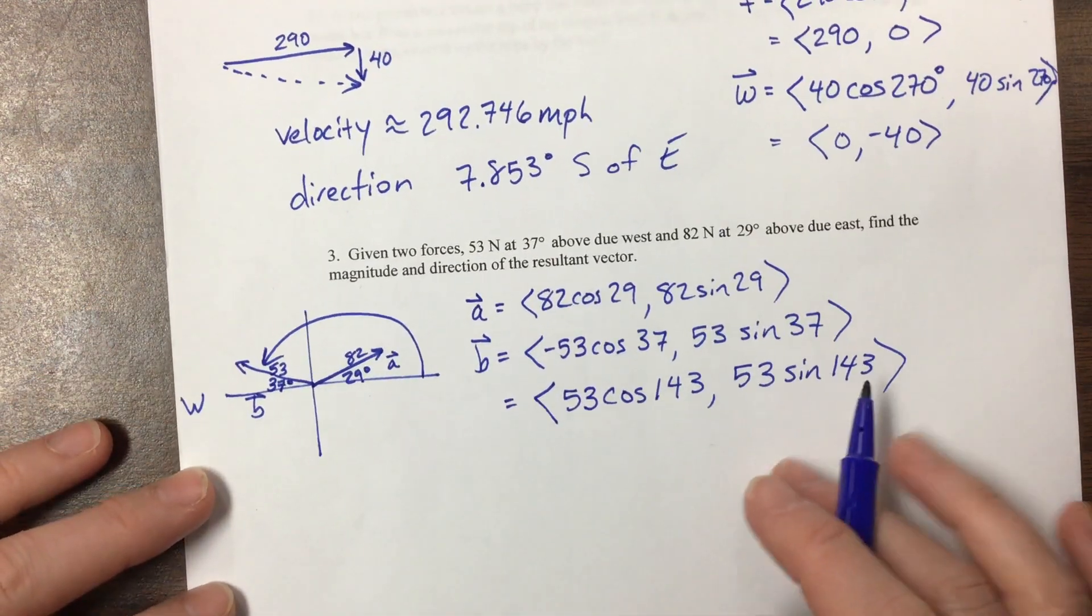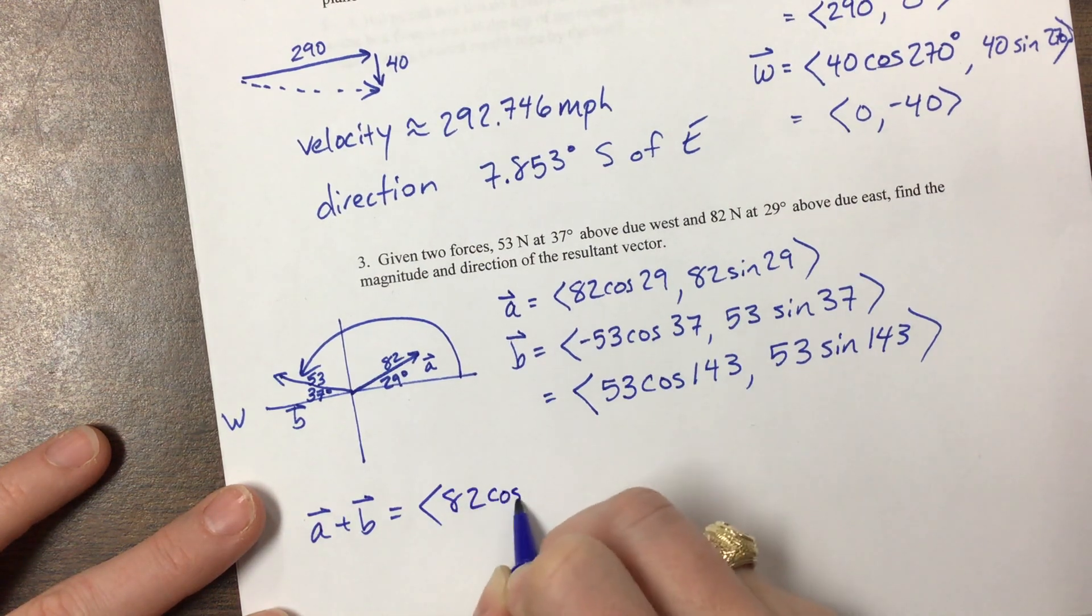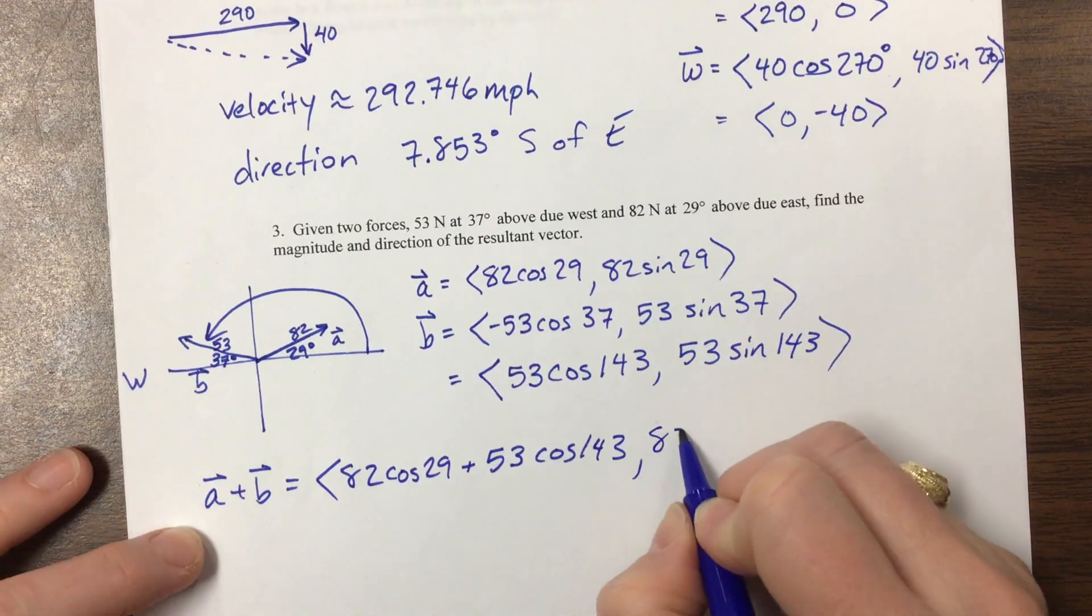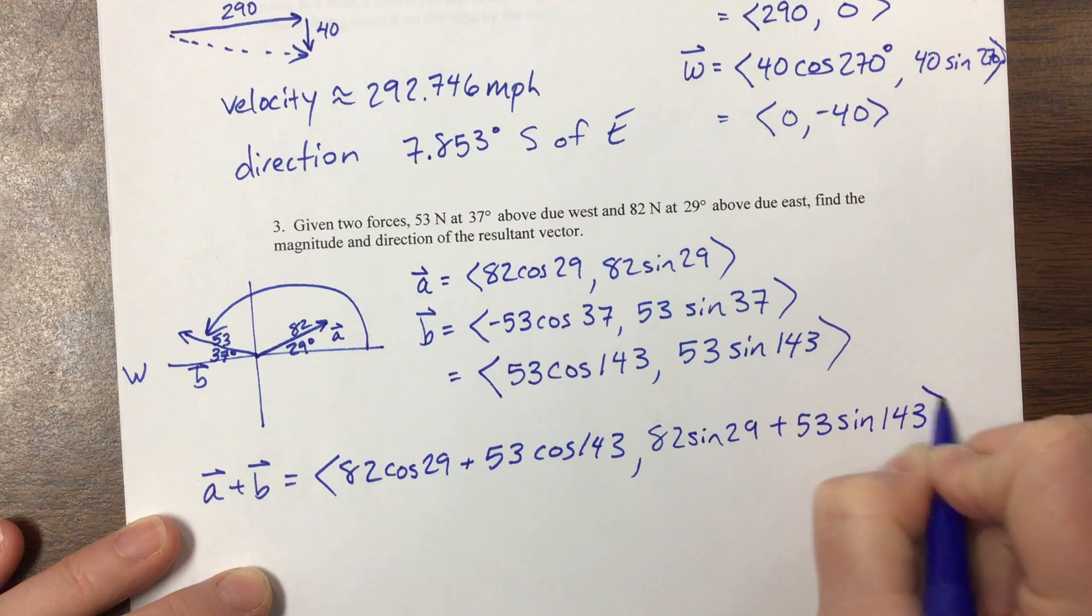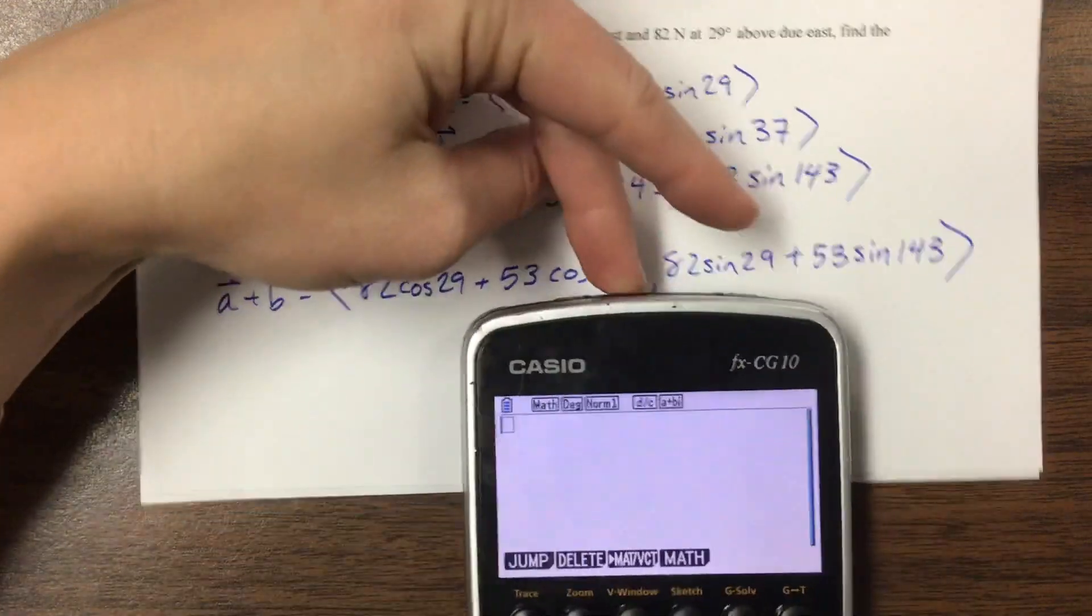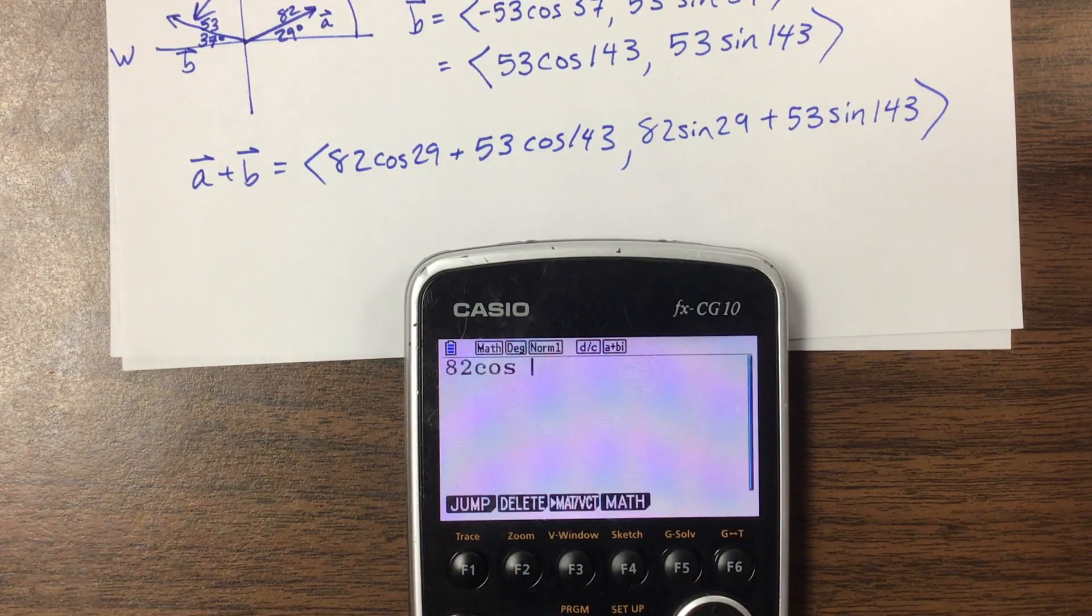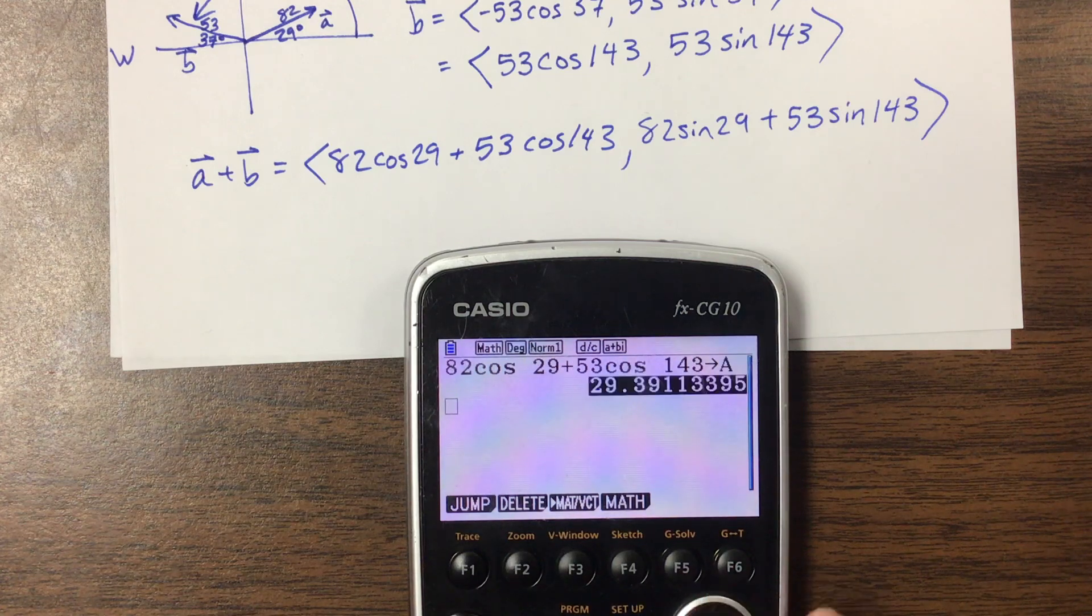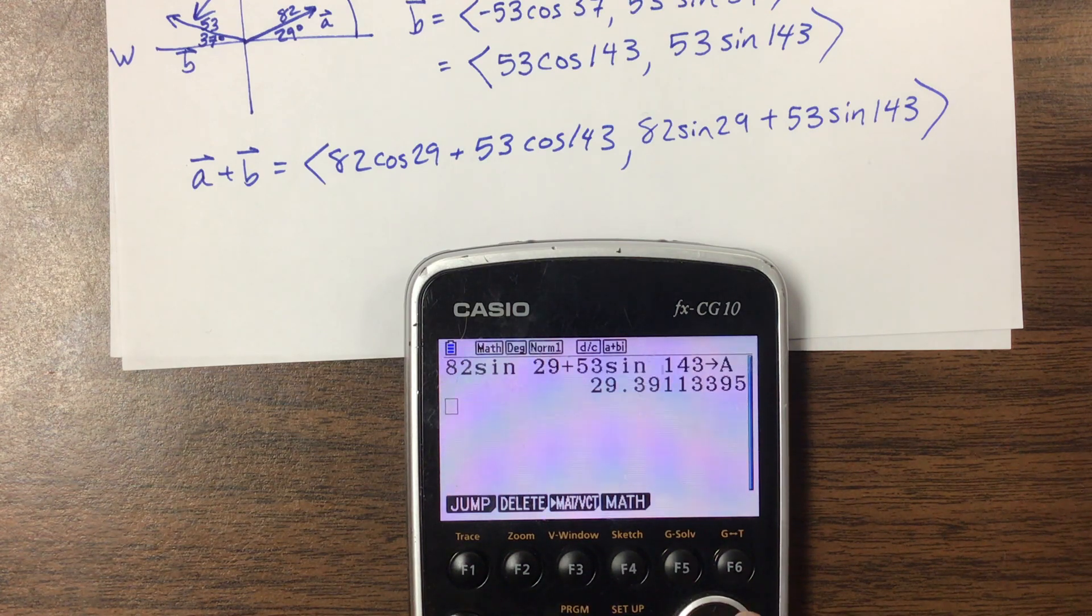So now, we're going to go back and do what we did in video one. And I have that a plus b would be equal to 82 cosine 29 plus 53 cosine of 143. And then the y value is 82 sine of 29. I think these problems are not necessarily hard. They're just a lot of details. And it's easy to kind of get lost in the, they're tedious more than they are challenging. I hope you agree with that. So now I'm going to store this, I'm going to plug these values in, store that as a.